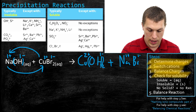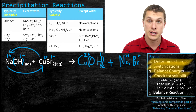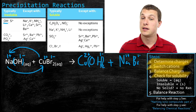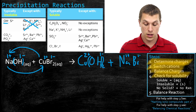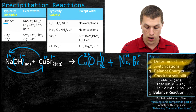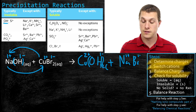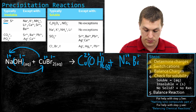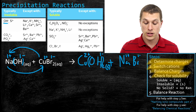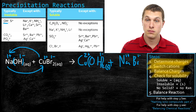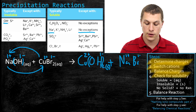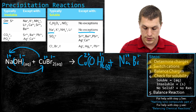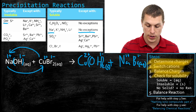Step four: check for solubility. Looking at copper hydroxide, at the very top of our insoluble compounds table we see hydroxide — hydroxide is typically insoluble. Copper is not listed among the exceptions, so copper hydroxide is insoluble and forms a solid. We have a precipitation reaction. Now checking sodium bromide: sodium appears in our typically soluble list with no exceptions, so any sodium-containing compound is always soluble. Sodium bromide is soluble — we write aqueous. We're done except for balancing the chemical reaction, which I'll leave for you.